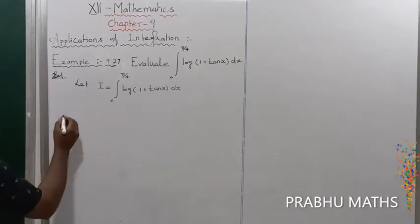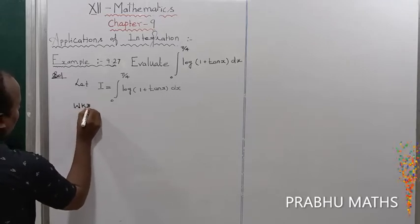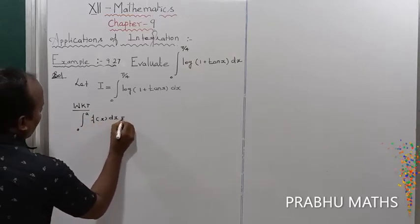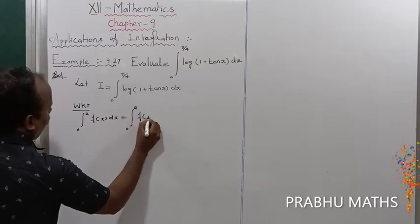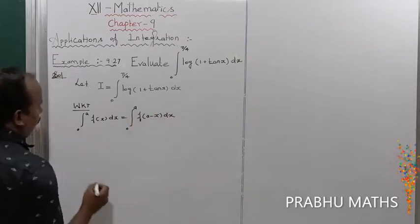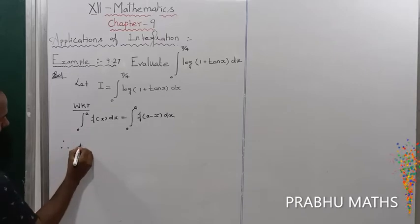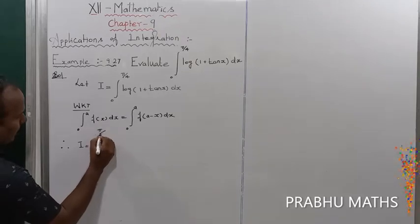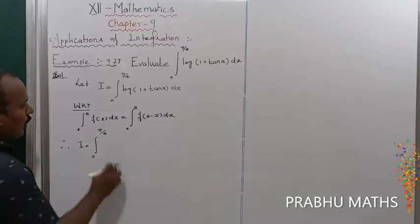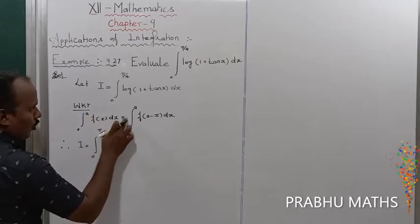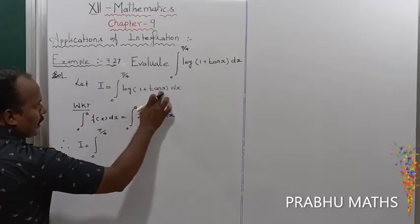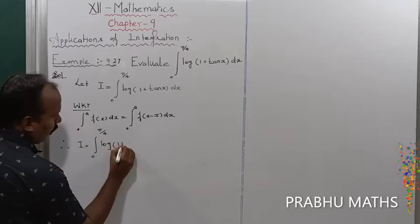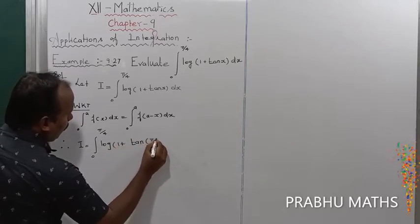Next, we apply the limit substitution formula. We know that the formula: integral from 0 to a of f(x) dx is equal to integral from 0 to a of f(a − x) dx. Therefore, I is equal to integral from 0 to π/4, where A is replaced by π/4 and x is replaced by π/4 − x.